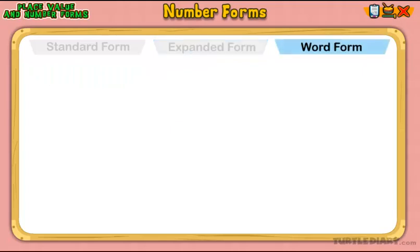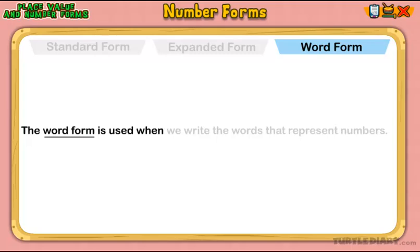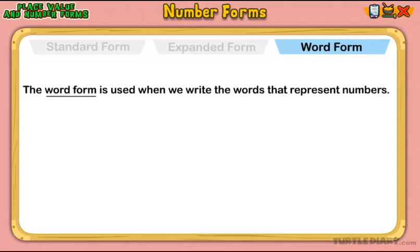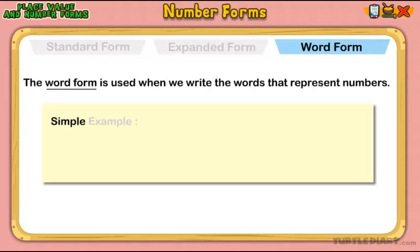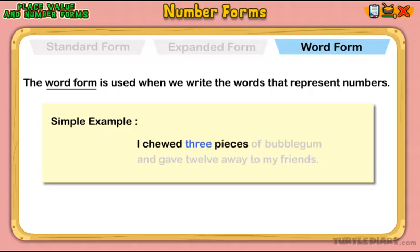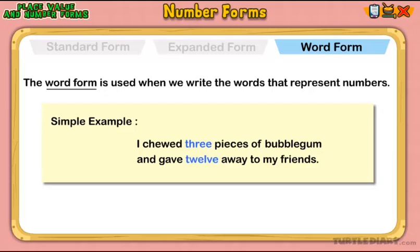Word form. The word form is used when we write the words that represent numbers. Here is a simple example: I chewed three pieces of bubble gum and gave twelve away to my friends. Here, three and twelve represent the numbers in word form.